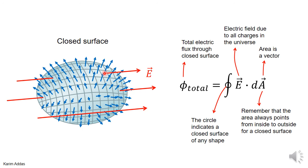The electric field written here is the total electric field due to all charges in the universe. This is what the integral of E dot dA represents through this surface. Remember, it's not enough to just know this equation — you have to understand all these subtle details to be able to understand this equation in depth.